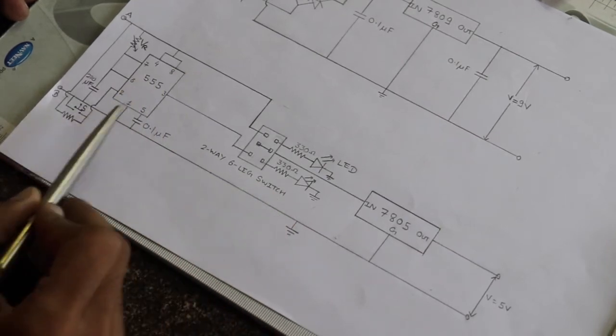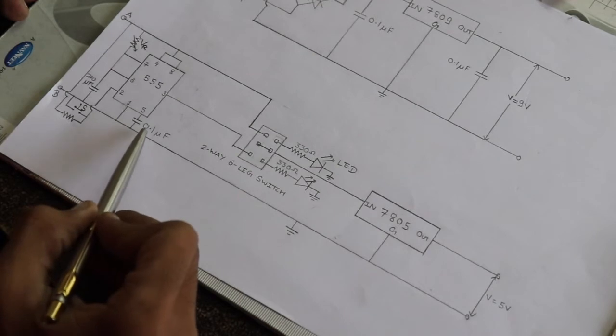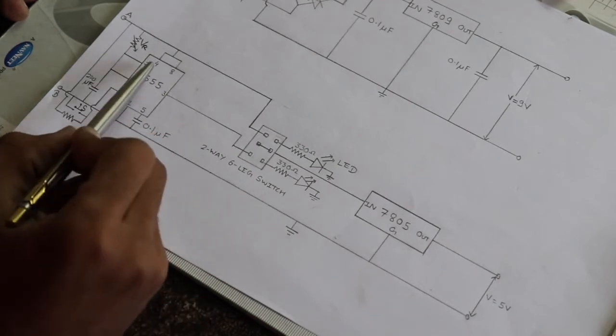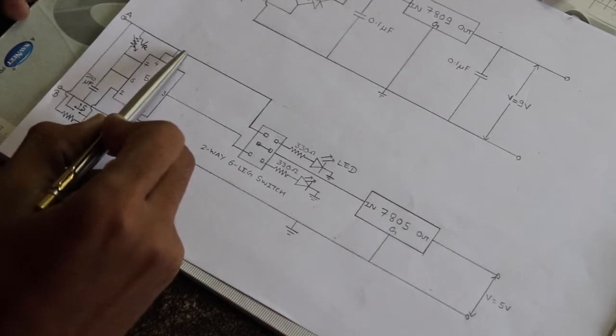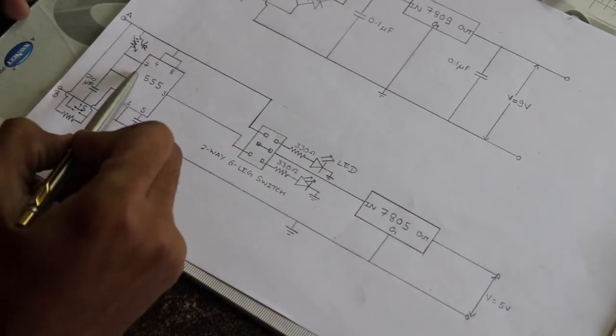Pin number 1 is given to the ground. Pin number 5 is given to the ground through 1 microfarad capacitor. Pin number 4 and pin number 8 are shorted and given to the positive of the output. Pin number 7 and 6 are shorted.